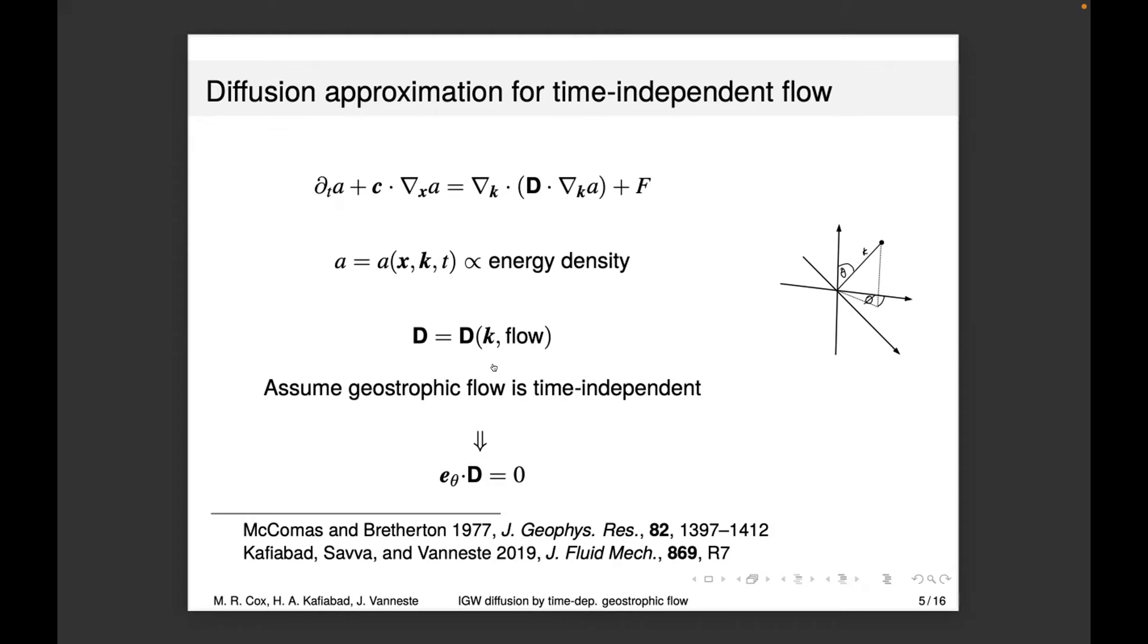Dong et al. looked at the diffusion equation in the shallow water case, which is the same but in two dimensions. They found that if you relax the assumption of time independence and make the flow slowly time dependent, you get diffusion across the constant frequency surface. In two dimensions, this surface is a circle, and you get significant diffusion across it.